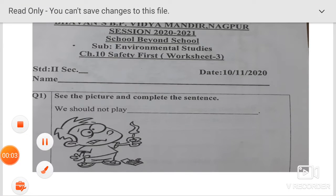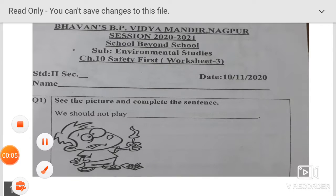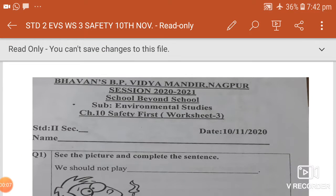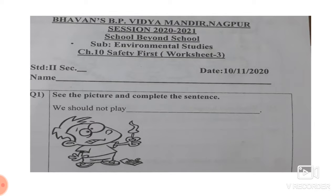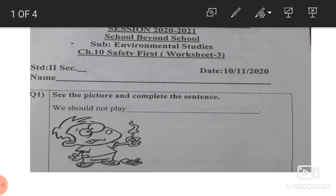Now, we'll start with the worksheet children. We come to worksheet number 3. What does the worksheet say? What does question number 1 say? Yes, look at this carefully. See the picture and complete the sentence.